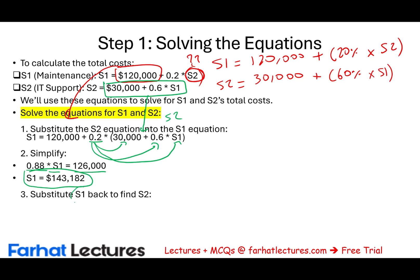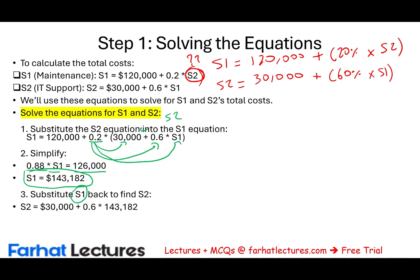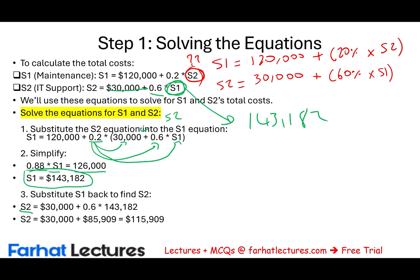Now we substitute S1 back into the S2 equation. S2 equals $30,000 plus 60% times $143,182. Solving this equation, we find that S2 equals $115,909.